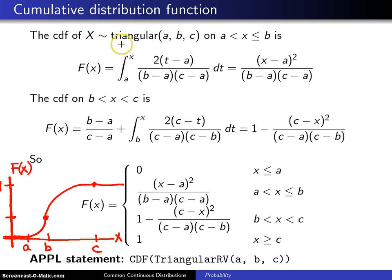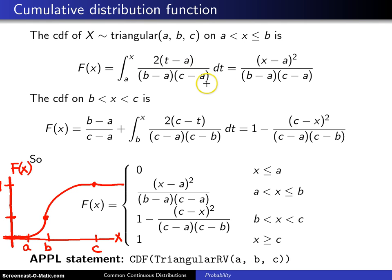Assume that x is triangular with parameters a, b, and c. On the first segment between the minimum and the mode, the CDF F of x will be the integral from a, the minimum, up to x of f of t dt, and that is 2 times t minus a, divided by b minus a, times c minus a, dt. When that is integrated and simplified, it turns out to be this. So there is the CDF, and here is the picture of it on that first segment.